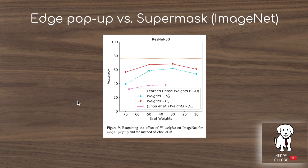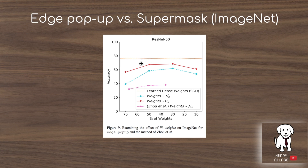A final plot shows the performance differences between the Edge Popup algorithm and the Supermask at ImageNet scale. Edge Popup outperforms the previous algorithm on ResNet-50 for ImageNet classification across different sparsity levels. The peak performance occurs between 30–50% of weights, and it's surprising that the subnetwork with 50% sparsity of the dense ResNet-50 almost matches the fully optimized ResNet-50 trained with SGD.